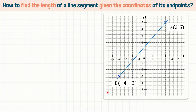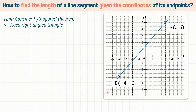So how can we make use of the coordinates to determine the length of line segment AB? The hint is that we need to use the Pythagoras theorem. The key requirement in Pythagoras theorem is that we need to have a right-angle triangle. We do not just randomly create a right-angle triangle — we need to employ a certain strategy and do it strategically.